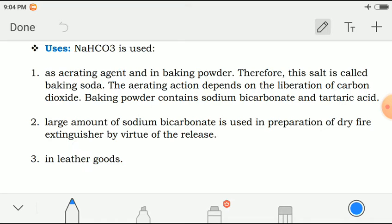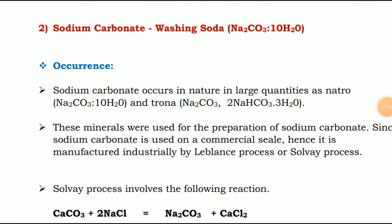Now the second compound is sodium carbonate, also known as washing soda. Its chemical formula is Na₂CO₃·10H₂O. Sodium carbonate occurs in nature in large quantities as Nitro (Na₂CO₃·10H₂O) and Trona (Na₂CO₃·2NaHCO₃·3H₂O). These minerals were used for the preparation of sodium carbonate.